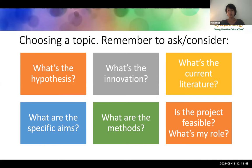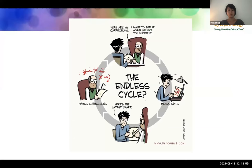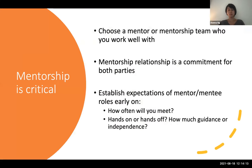What are the specific aims of your project? What are the methods, and are they feasible? What is your exact role and what are the expectations? When these things are outlined upfront, you can often break the endless cycle of going to your mentor, getting feedback, and having to rehash ideas over and over.